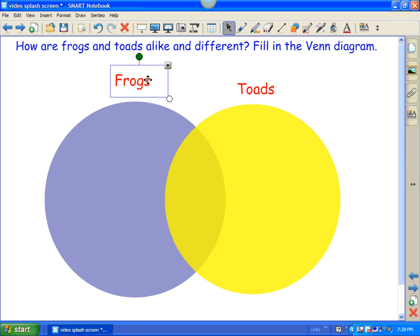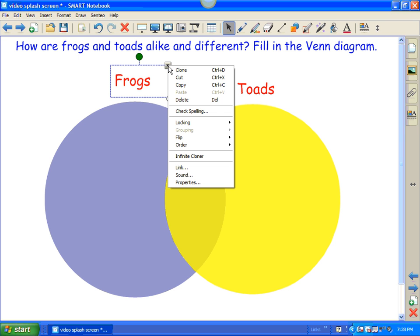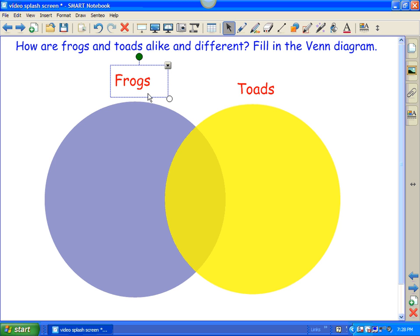So, what I want to do is click on the word frogs and do the drop down menu and go to order, bring to front. When I do that now, and when I bring it on top of my Venn diagram, it now is in front of the Venn diagram.